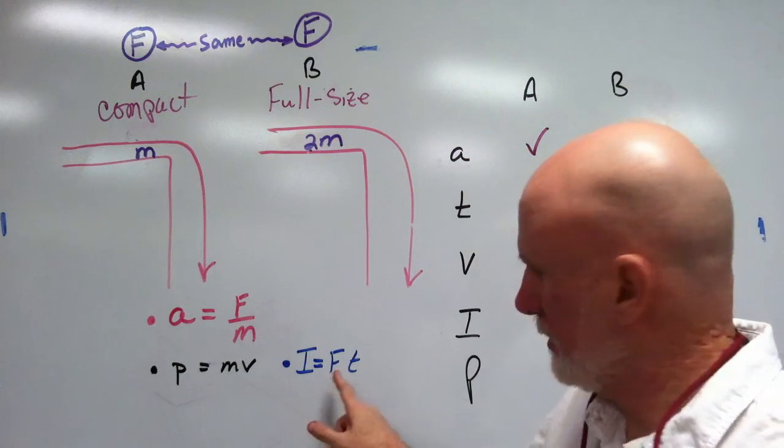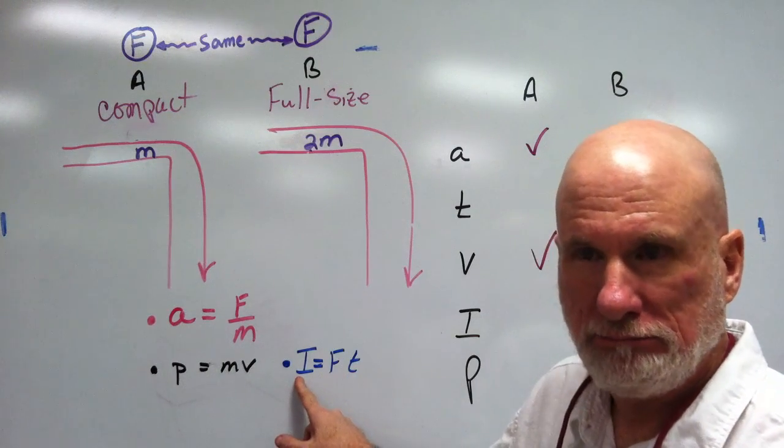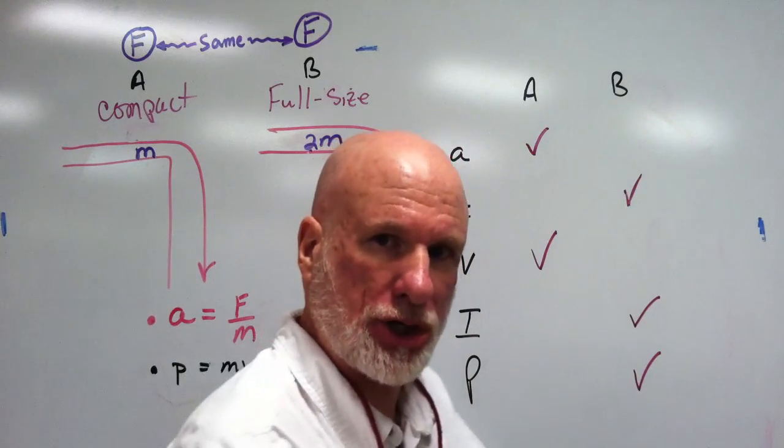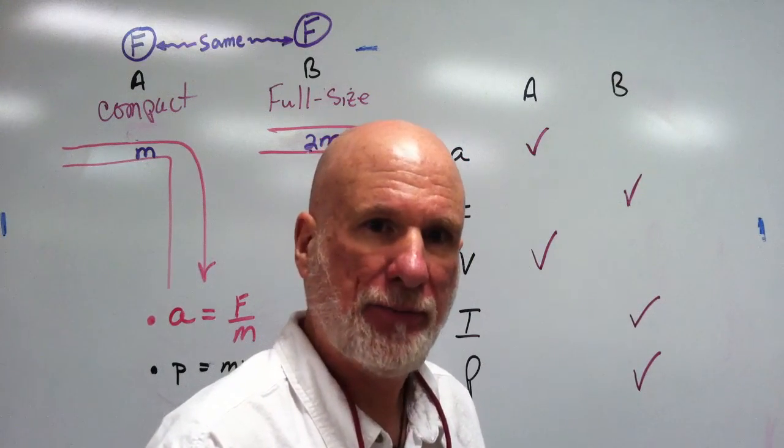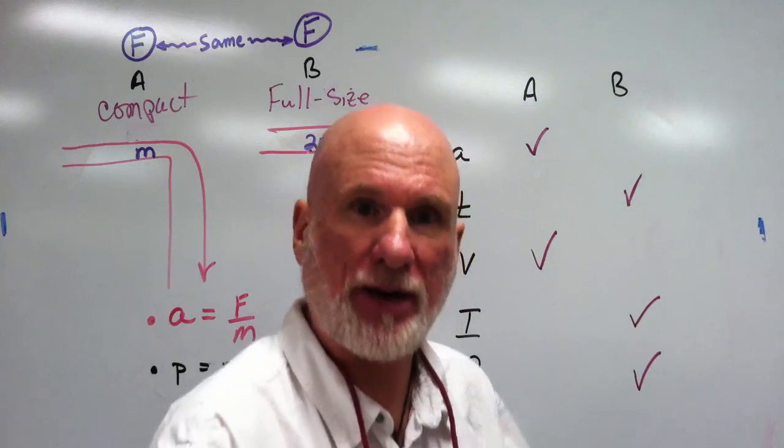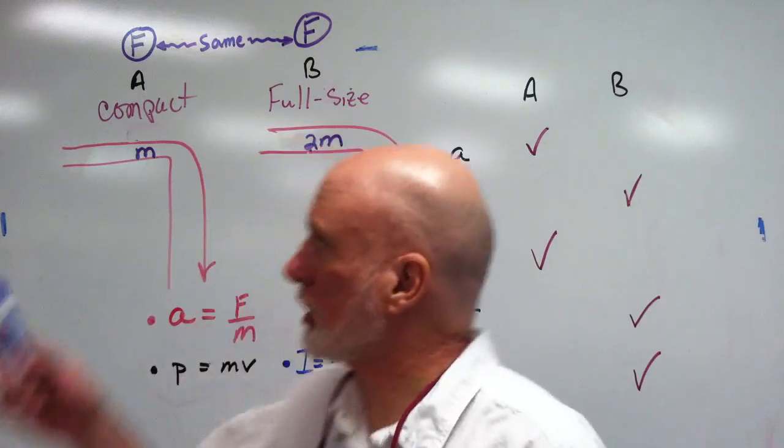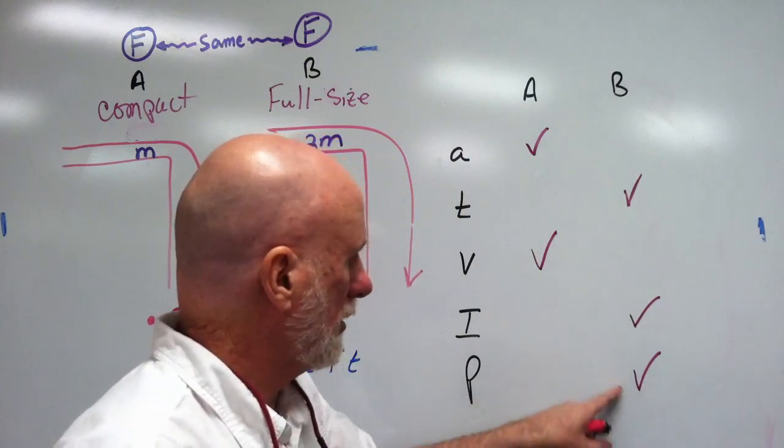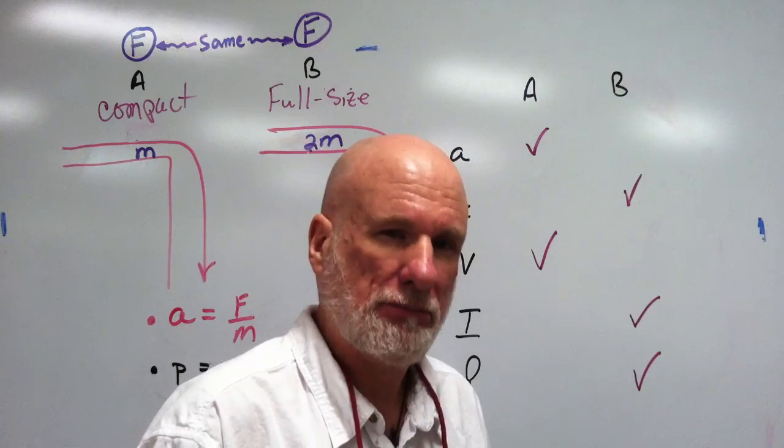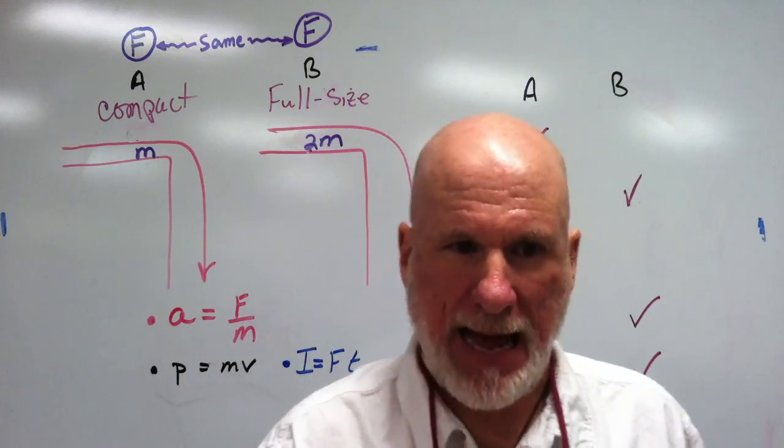Force is constant, larger T, larger I. So the car that takes longer to get to the edge will have the greater impulse. Greater impulse, greater change in momentum, greater final momentum. So B, the larger car, will have a greater impulse and momentum at the end, greater change in momentum.